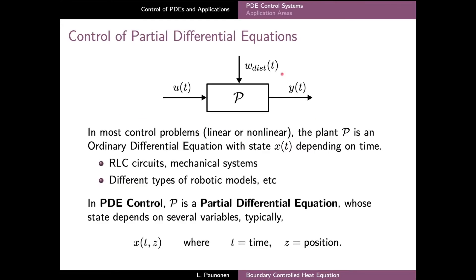In general, in control theory and systems theory, we are interested in control of a system P with some dedicated control inputs U, some measured outputs Y, and possible external disturbance input signals. In most control problems in control engineering, the control system P is either a physical system or a mathematical model described by either a linear or non-linear ordinary differential equation which describes the evolution of the state of the system.